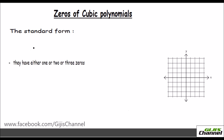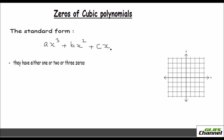So let's write the standard form for a cubic polynomial. That would be AX cubed. Since it is a cubic polynomial, it is AX cubed plus BX squared plus CX plus D. So your P of X would be this.